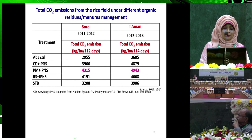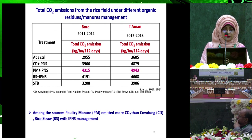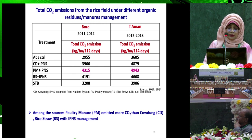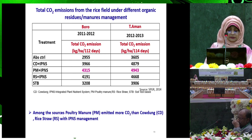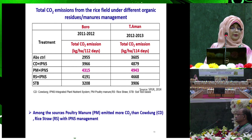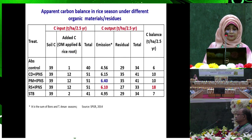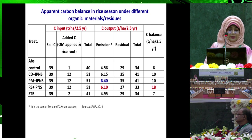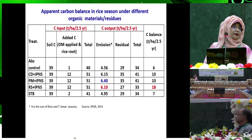Research shows that the total carbon dioxide emission from rice fields under different organic residual management indicates that poultry manure emits more carbon dioxide than cow dung or rice straw with IPNS management. The carbon balance is more favorable in the rice straw with IPNS system.